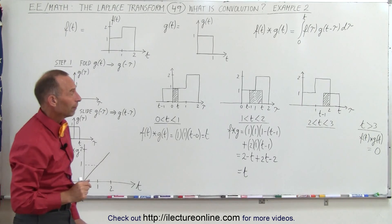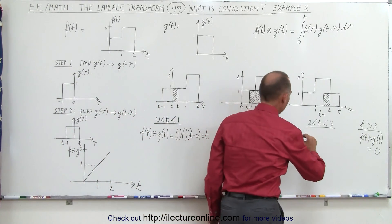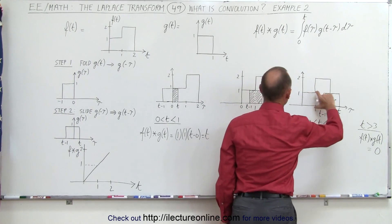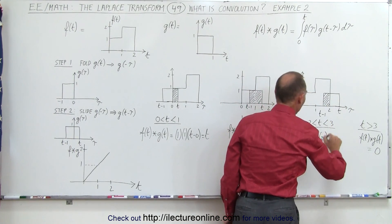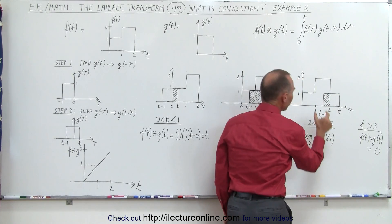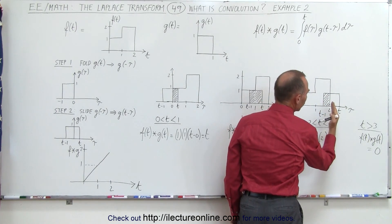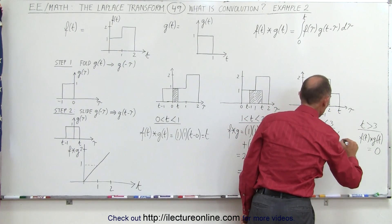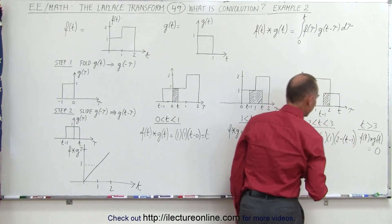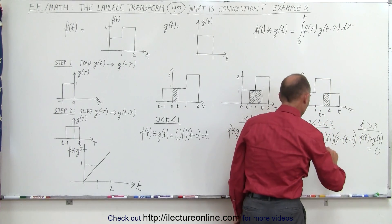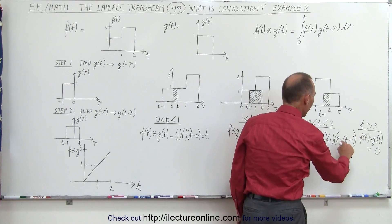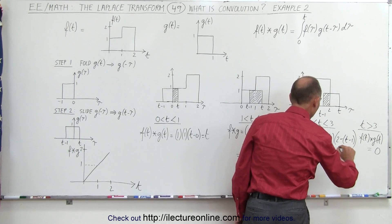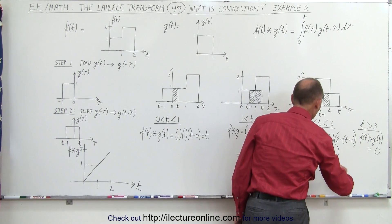Finally, the third region there. Now again, we can say that the convolution of f and g is equal to the height of the first function, which is going to be equal to 2, times the height of the sliding function, which is going to be equal to 1, times the overlap, which is going to be from 2 to t minus 1, the difference between 2 and t minus 1, so this is going to be 2 minus t minus 1. This is going to be equal to 2 times 2 minus a minus 1, which is 3, and minus t. So finally, this is equal to 6 minus 2t.